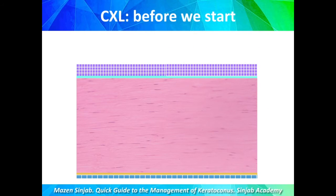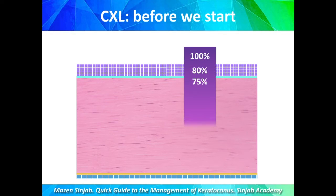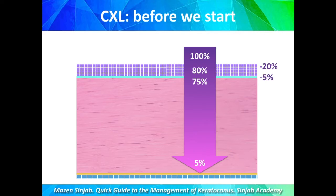It is important to know that application of UVA through the intact epithelium results in significant energy absorption: 20% of the UVA energy is absorbed by the epithelium, 5% is absorbed by Bowman's layer, and only 5% of the energy reaches the endothelium.